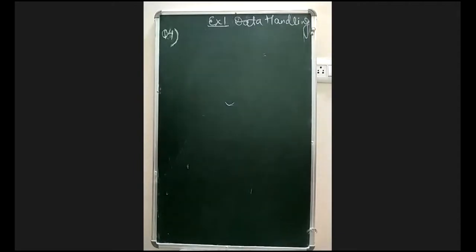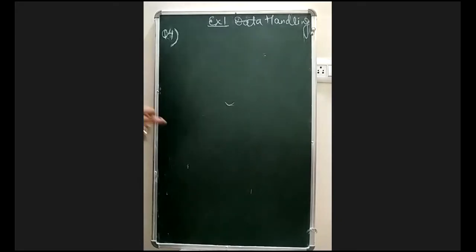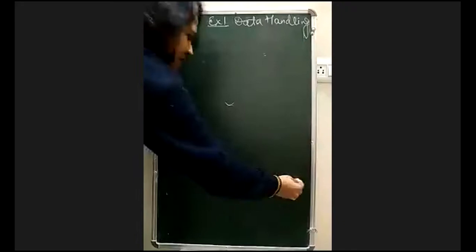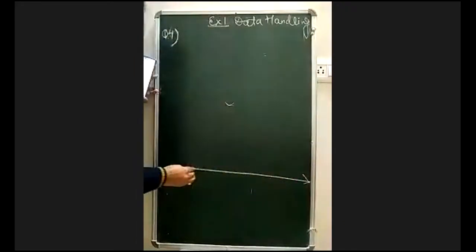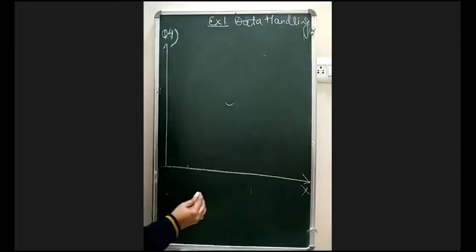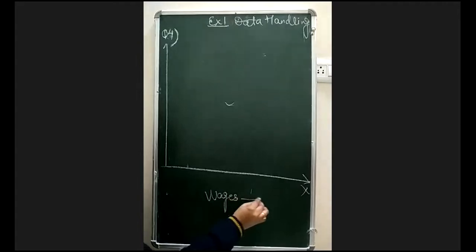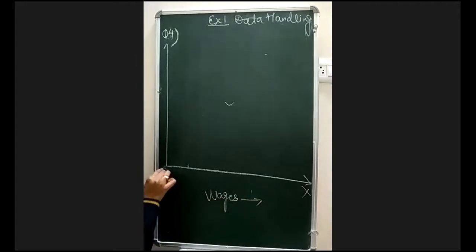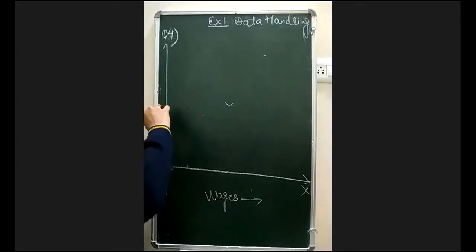Question four asks us to draw a histogram related to the previous data from question three. We have the class intervals and the number of workers. First we will draw two axes: the x-axis will represent wages (class intervals) and the y-axis will represent the number of workers.